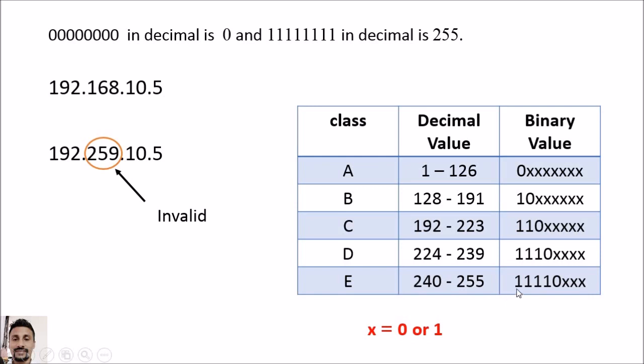If the decimal value is between 240 and 255, that is Class E. The binary pattern starts with four ones followed by zero, and the remaining three bits can be either one or zero.